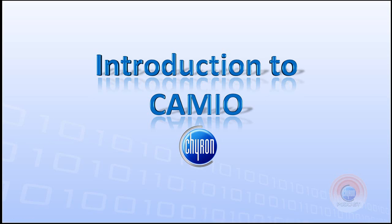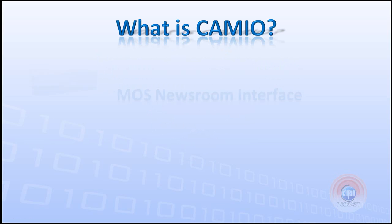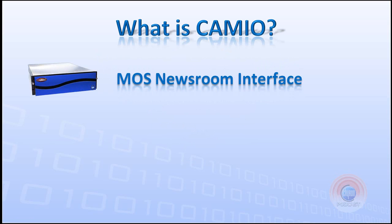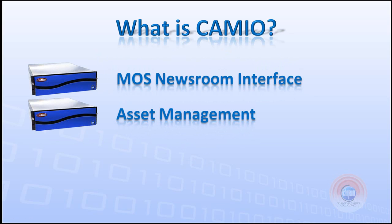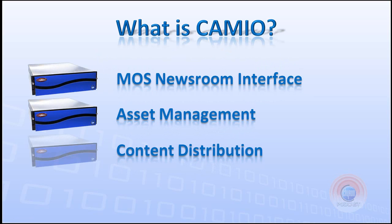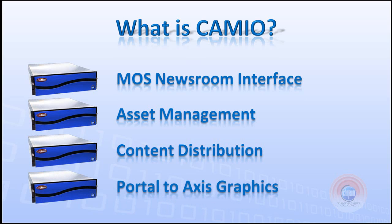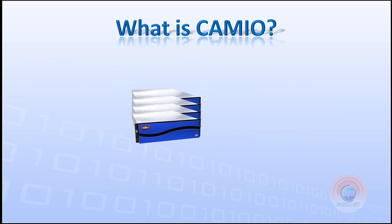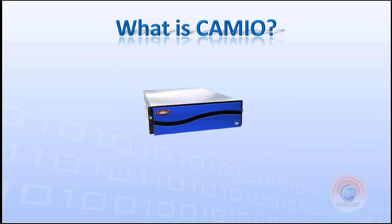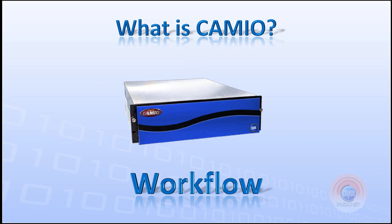Welcome to this introduction to Cameo. What is Cameo? It's a MOSS Newsroom interface to your newsroom computer system. It's also an asset management system for the templates and images and movie files used within the Lucy messages in the newsroom. It's also a content distribution system — as a journalist uses a graphic, it publishes the contents to the playout devices as required. It's also a portal to the Access Graphics Workflow system. It's four different things happening at the same time, all in one box. But this is more than just hardware — this is actually all about workflow.